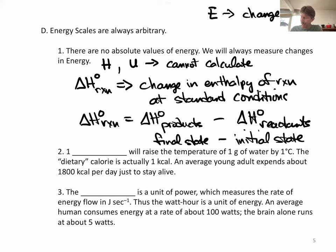One calorie will raise the temperature of one gram of water by one degree Celsius. The dietary calorie is actually one kilocalorie, that's what K-Cal stands for, or 1,000 calories.